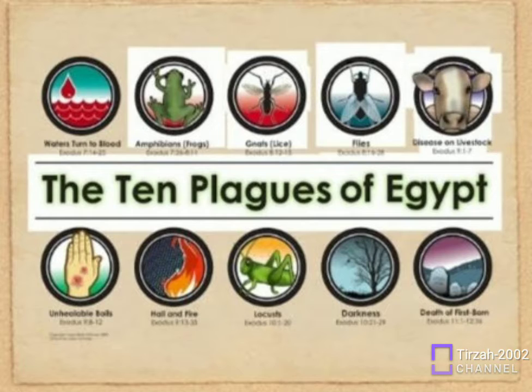Blood — God turns water into blood. The result: Pharaoh's magicians also turn water into blood. Exodus 7:14-24. Plague 2.